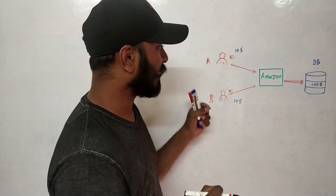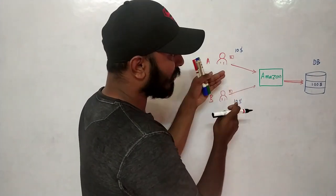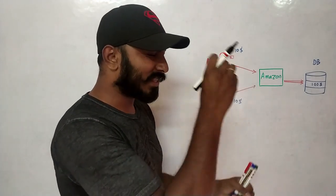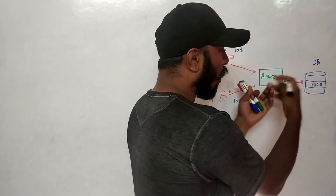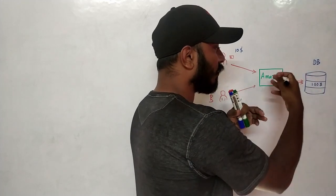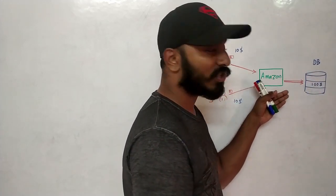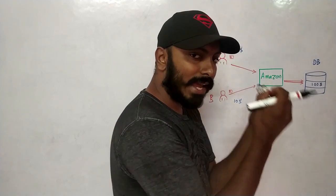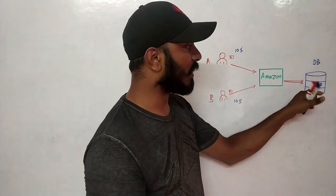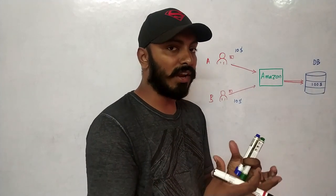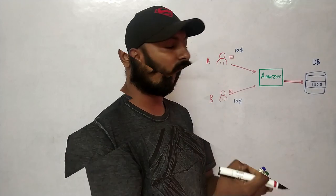What happens in that case is both requests go simultaneously into the Amazon server. Amazon will make connections, and what if those two connections also reach the database at the same time, and the request to deduct money from the Amazon wallet also happens at the exact same time?